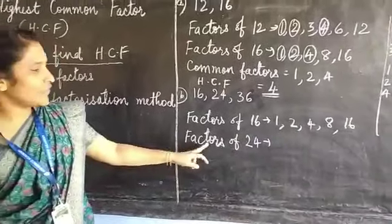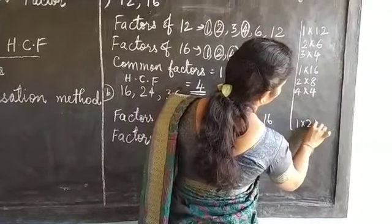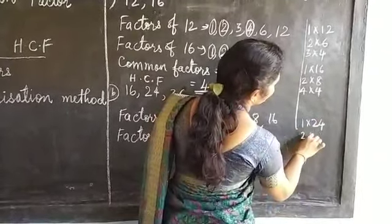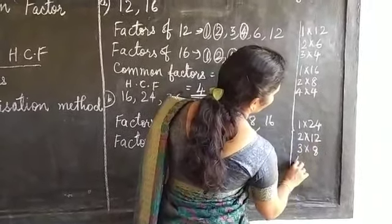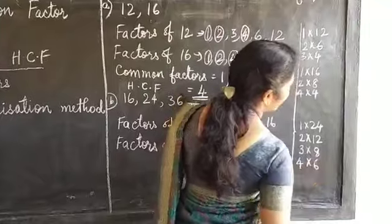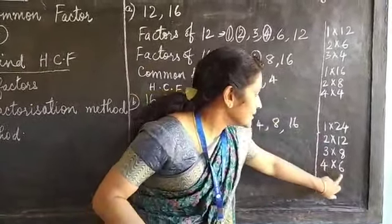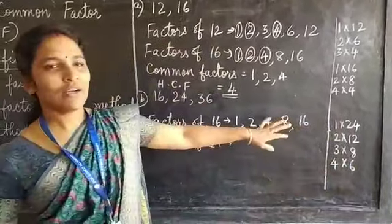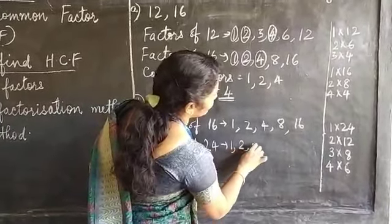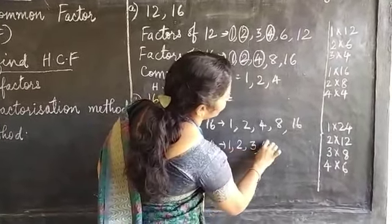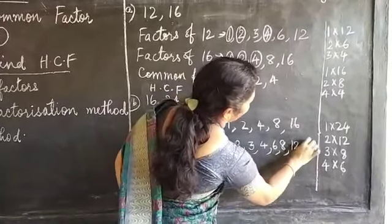Now which are the factors of 24? 1 × 24 = 24, 2 × 12 = 24, 3 × 8 = 24, 4 × 6 = 24. The factors of 24 are 1, 2, 3, 4, 6, 8, 12 and 24.